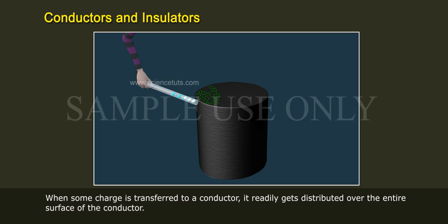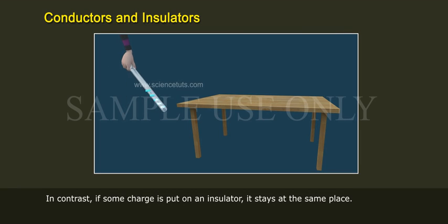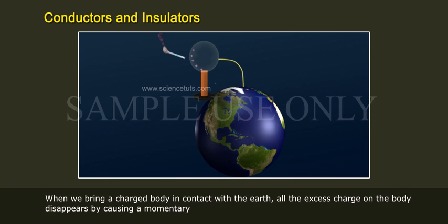When some charge is transferred to a conductor, it readily gets distributed over the entire surface of the conductor. In contrast, if some charge is put on an insulator, it stays at the same place.